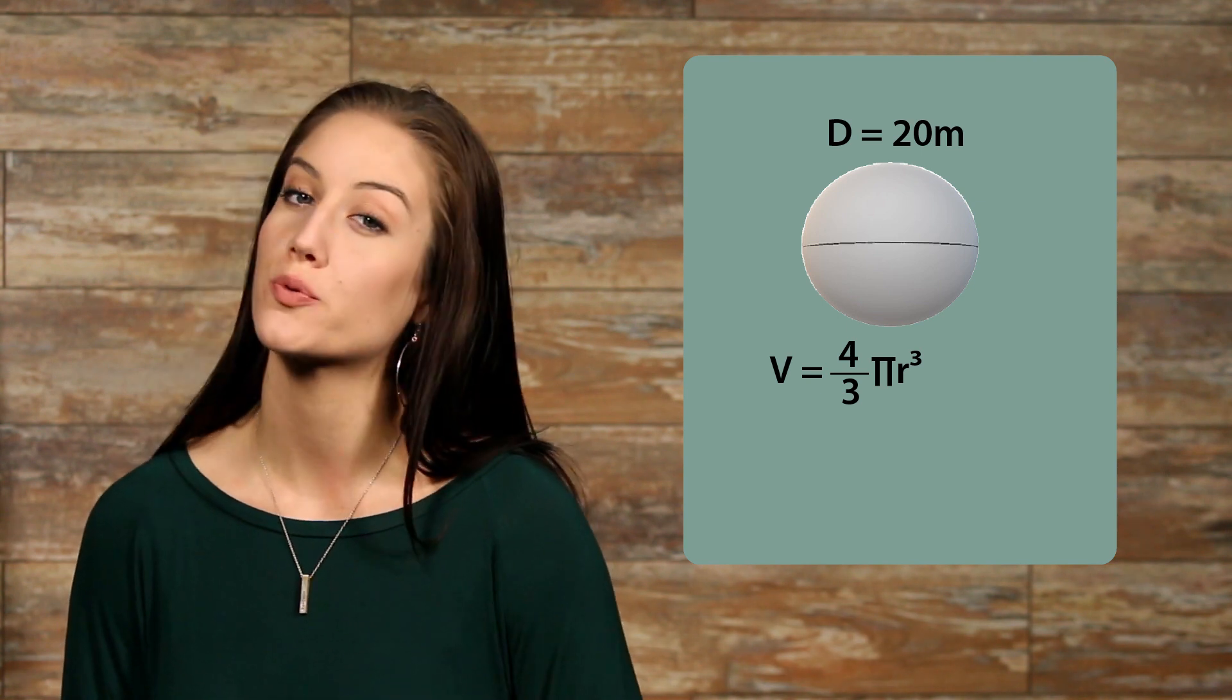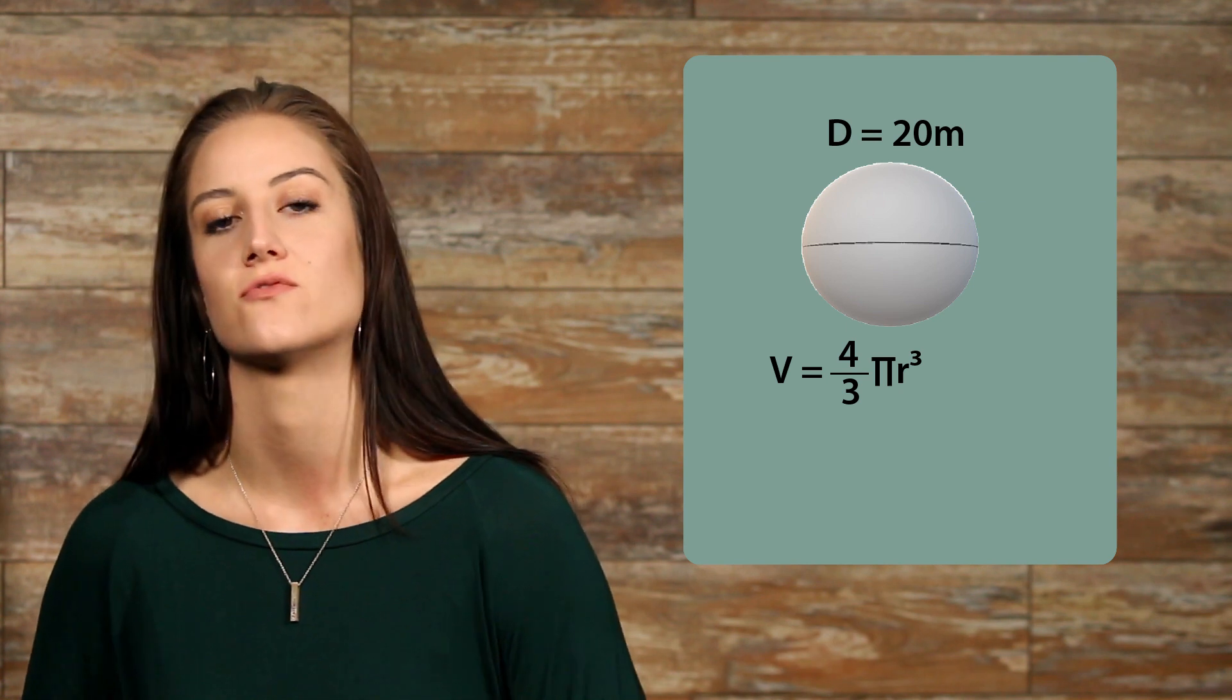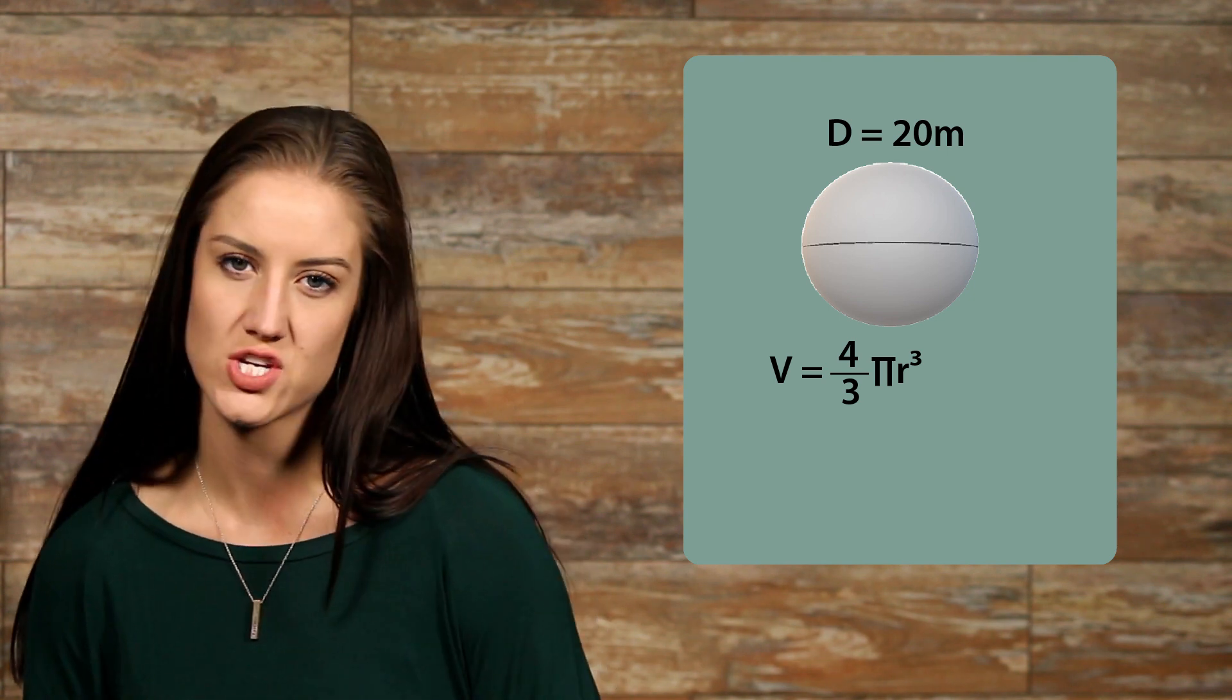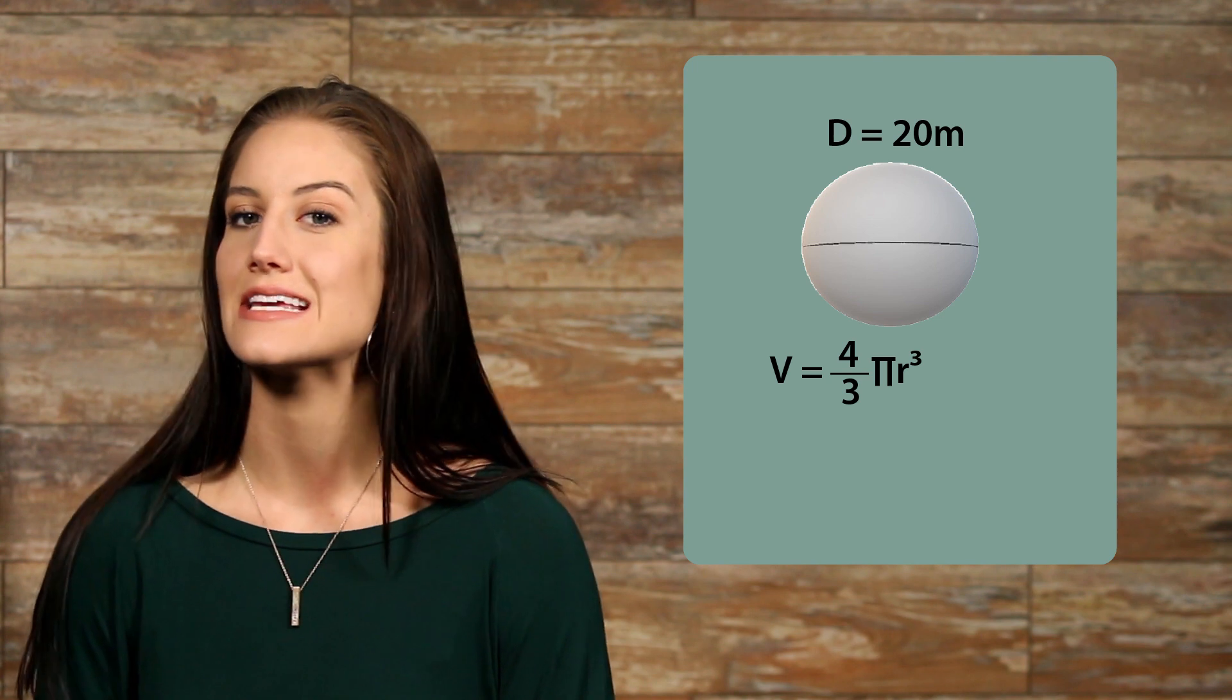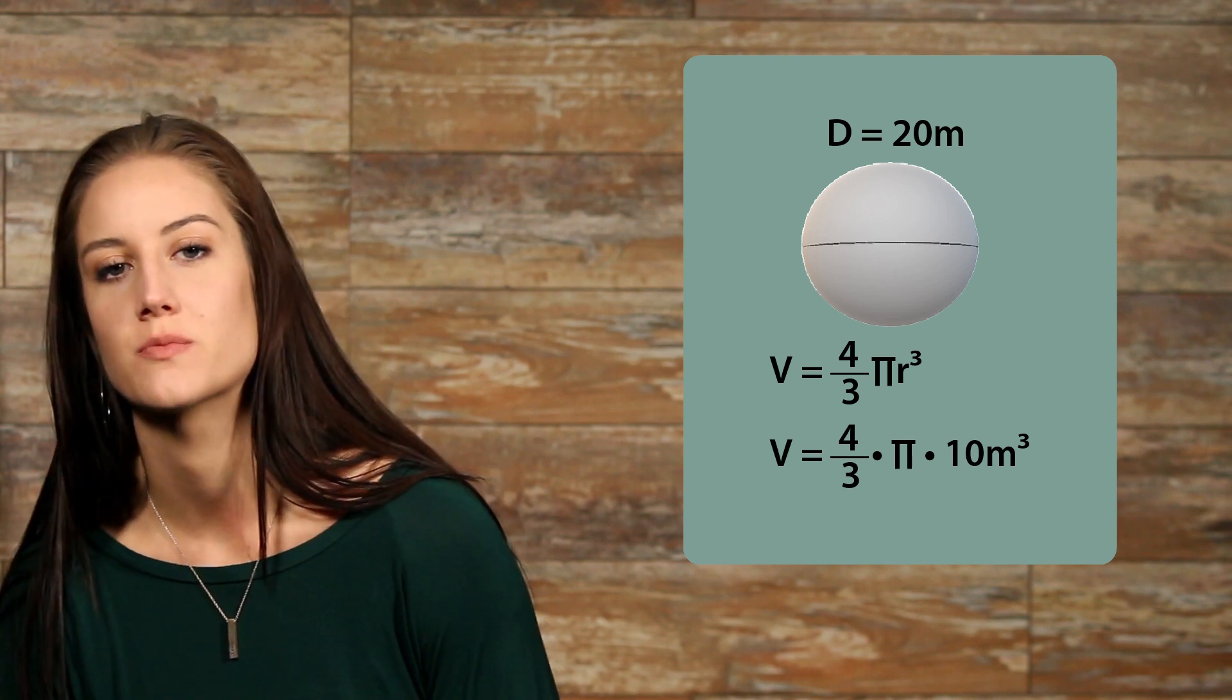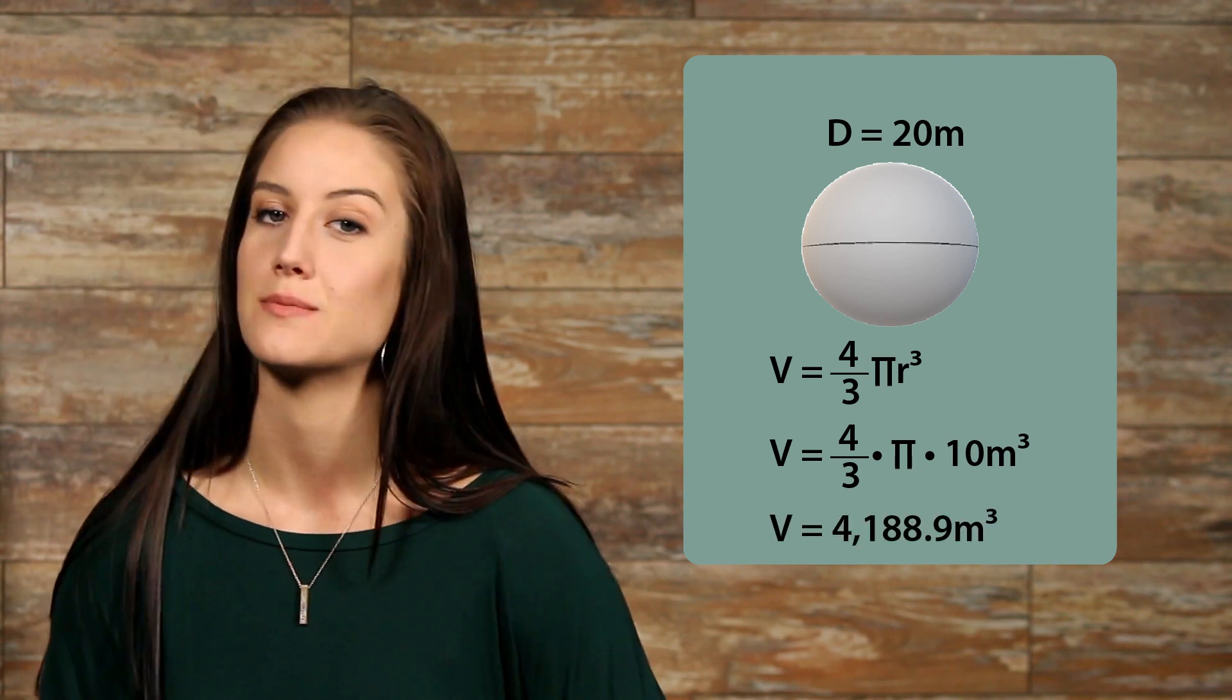Now you can do what is called a proof to prove that this is a formula, but for now we'll just go ahead and plug the numbers into the given formula. The sphere has a diameter of 20 meters. This is all the information we need to plug in and solve for our equation. We're looking for the radius, and we know that the radius is equal to half the diameter, which means that our radius is equal to 10 meters. When we plug 10 into our formula and solve, we get 4,188.9 meters cubed.